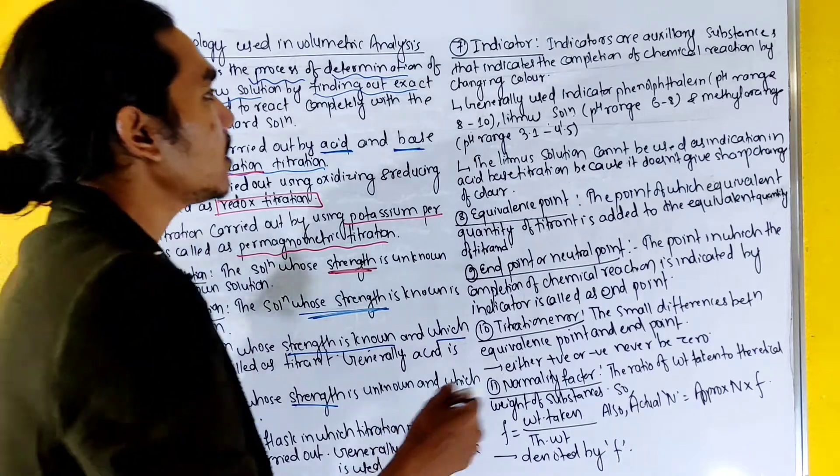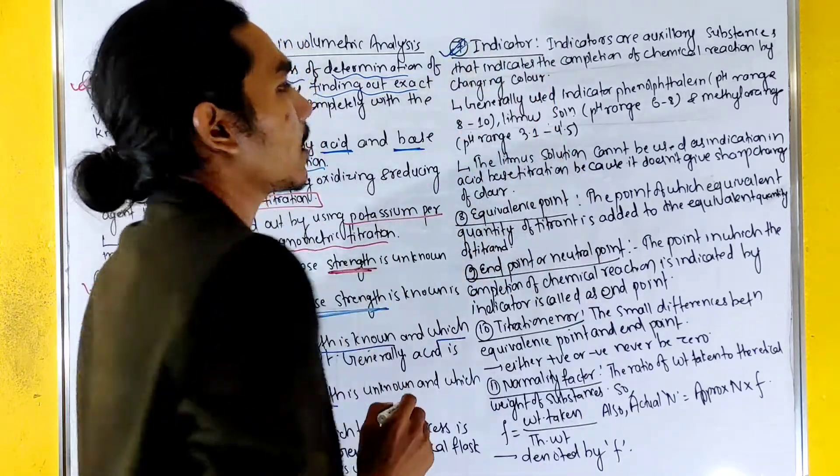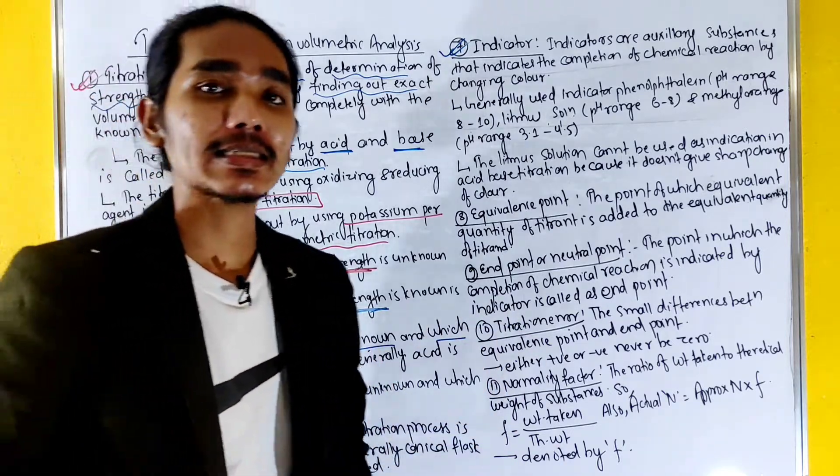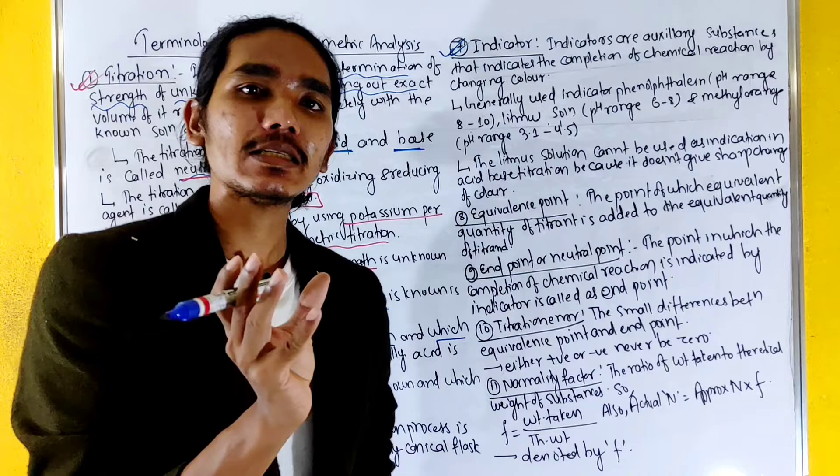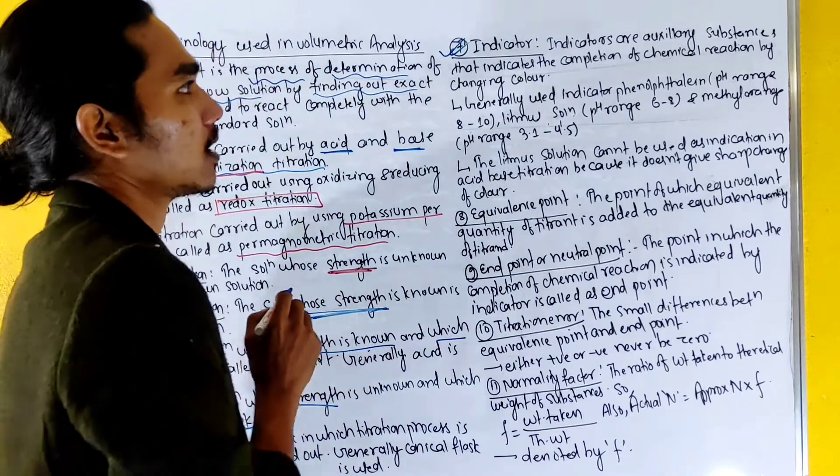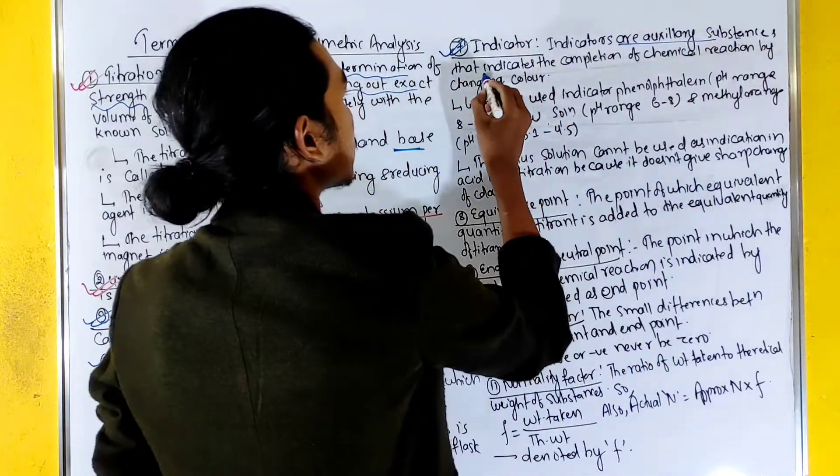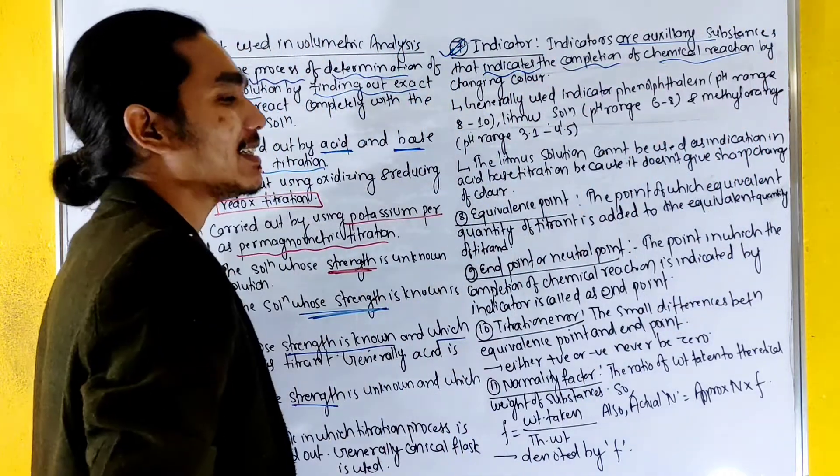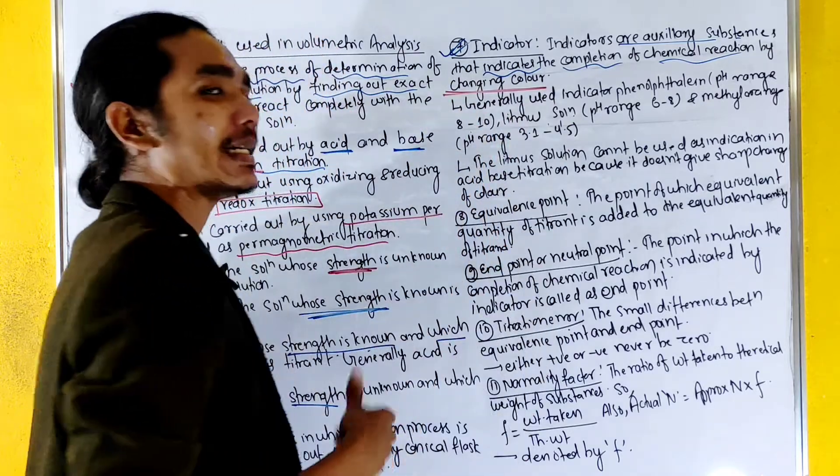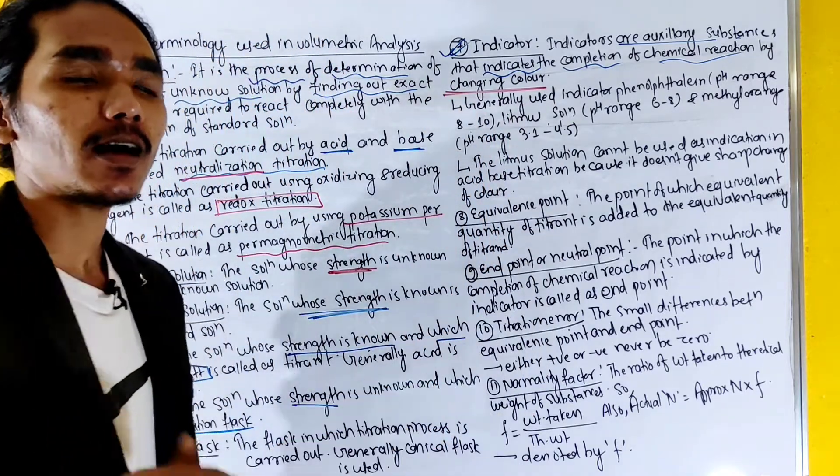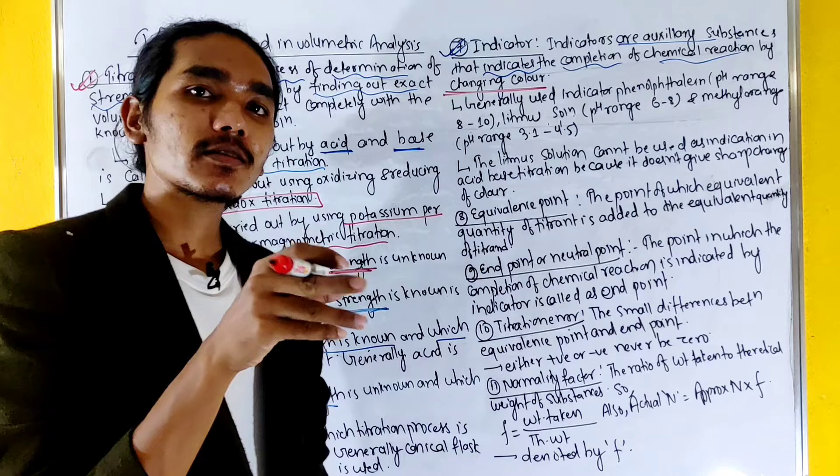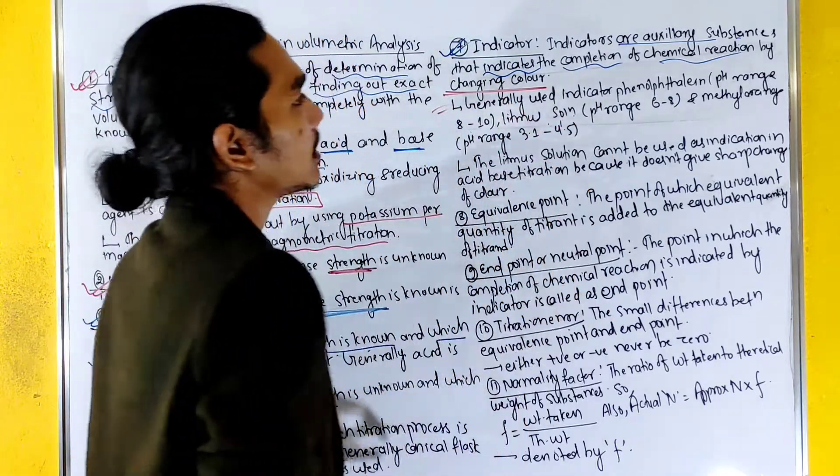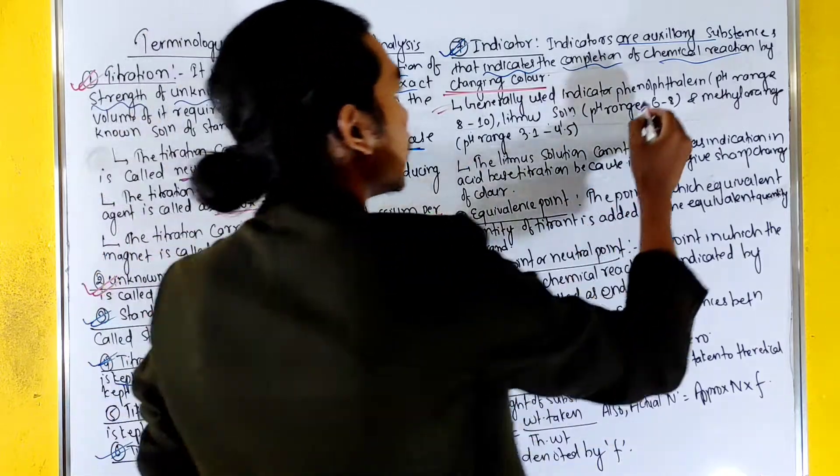What is indicator? Indicator indicates the completion of chemical reactions by color change. This is the auxiliary substance that indicates the completion of chemical reaction by changing the color.